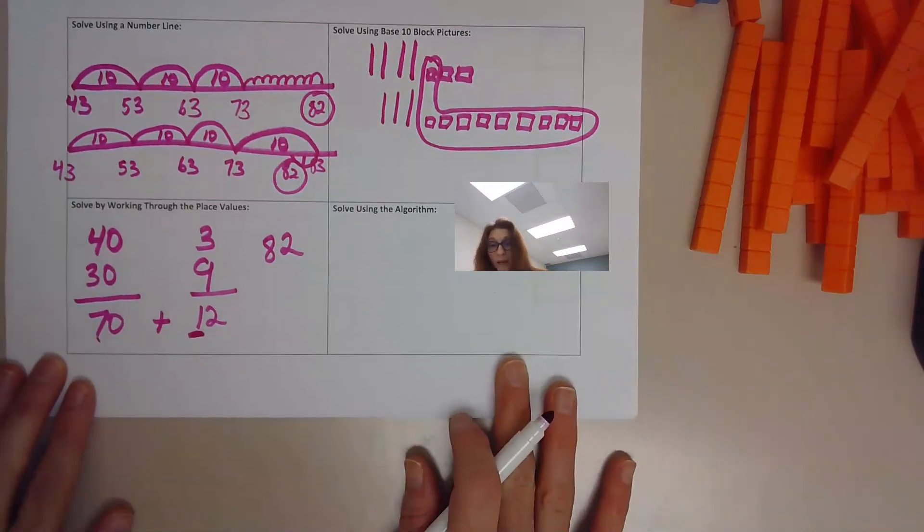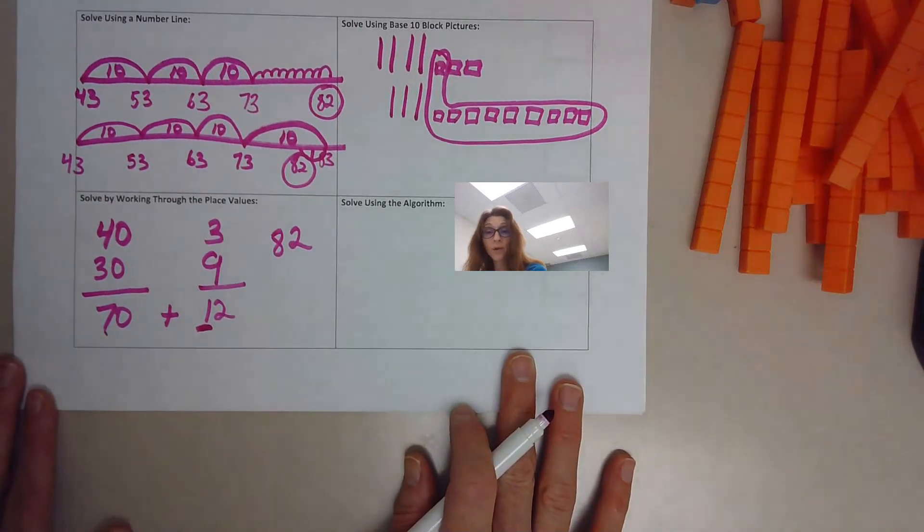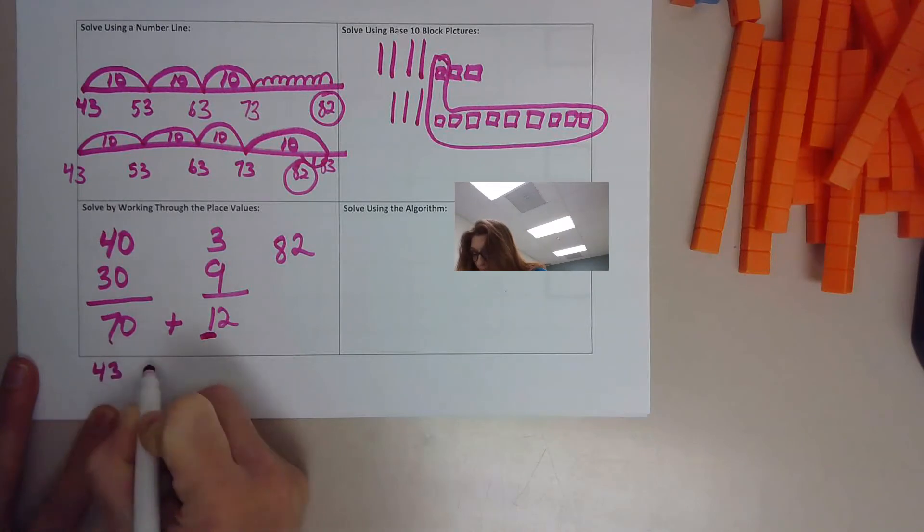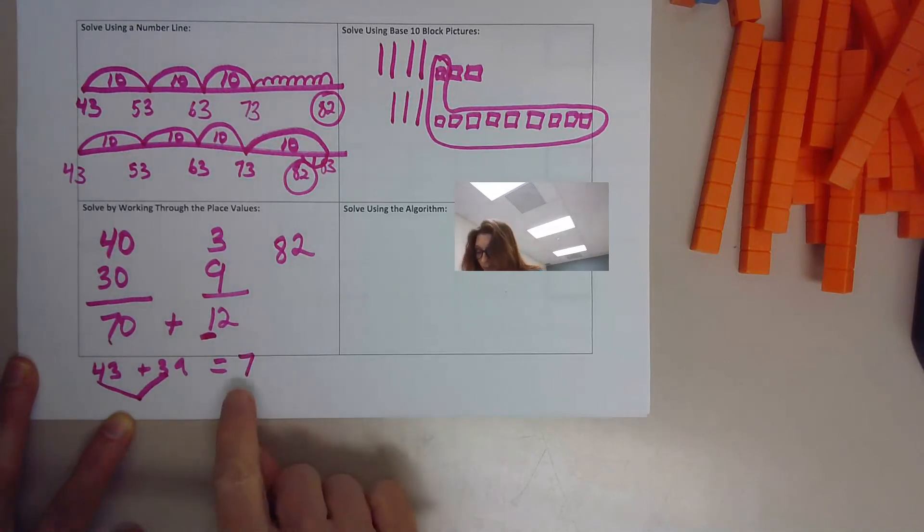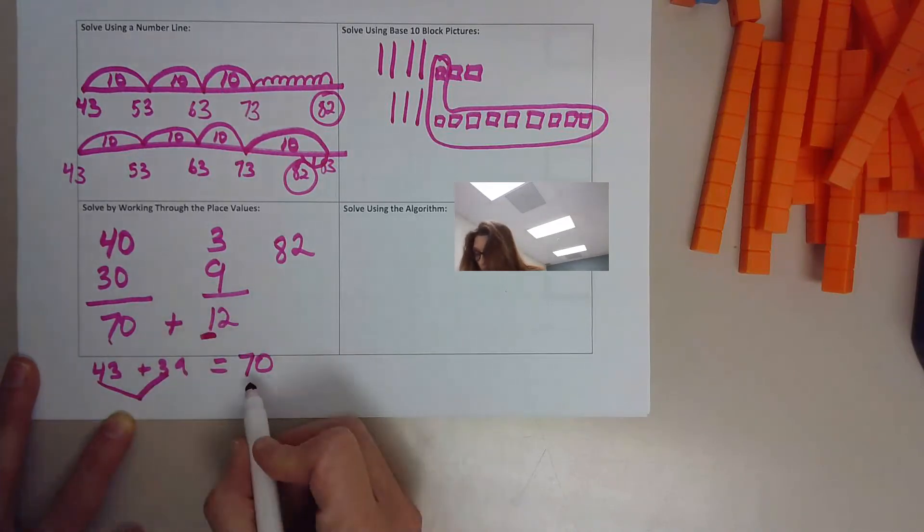I'm going to show you underneath another way. Once you can work through the place values easily, this is what I want you to do. 43 plus 39 is the same thing as this: 40 plus 30 is seven groups of 10. You put seven in the tens place value. Okay. Now that's our 70.